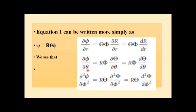Similarly, for dψ/dθ: since capital R and capital Phi are independent of theta, only capital Theta depends on theta. So we get capital R times capital Phi times dΘ/dθ. Likewise, the second derivative d²ψ/dφ² equals capital R times capital Theta times d²Φ/dφ².